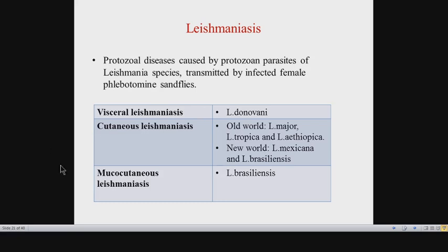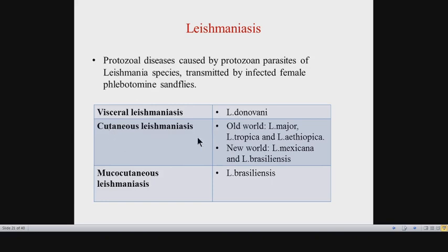There are three main forms of Leishmaniasis. The first is Visceral Leishmaniasis, the most aggressive form, caused mainly by Leishmania donovani. It is more endemic in the Indian subcontinent and Africa, though it can be found elsewhere. The second form is Cutaneous Leishmaniasis, more widely distributed and considered the most common form worldwide. Visceral is the most aggressive type, while cutaneous is the most common.